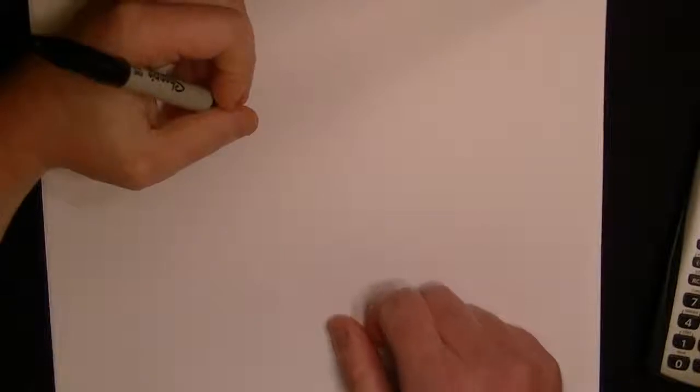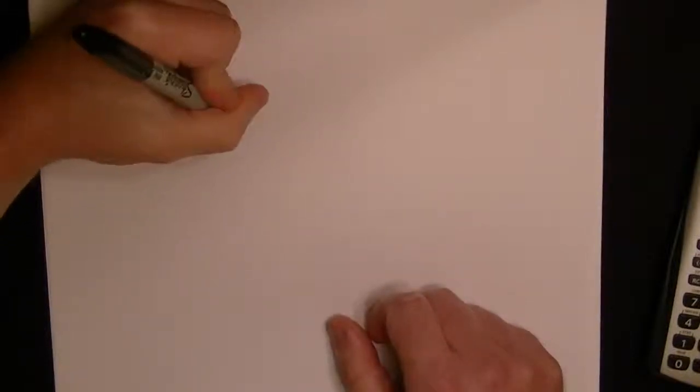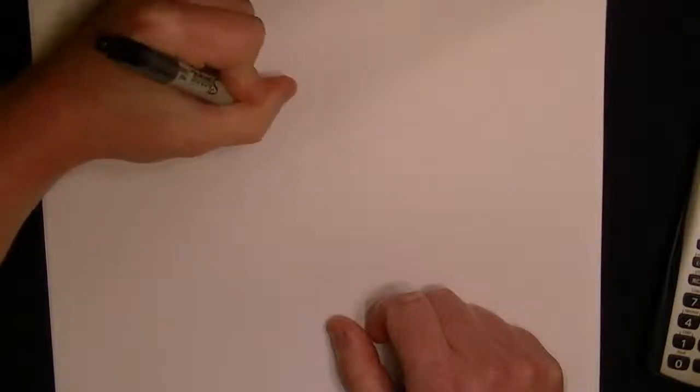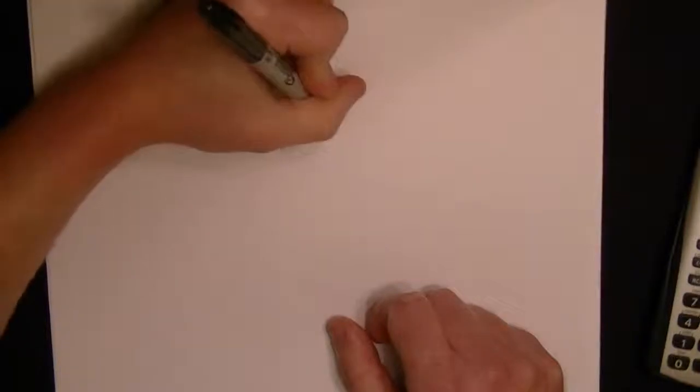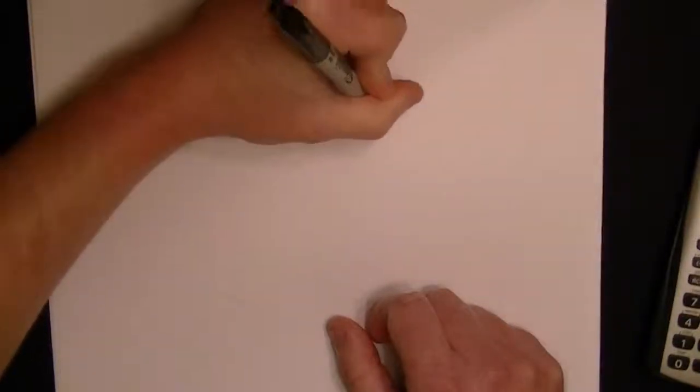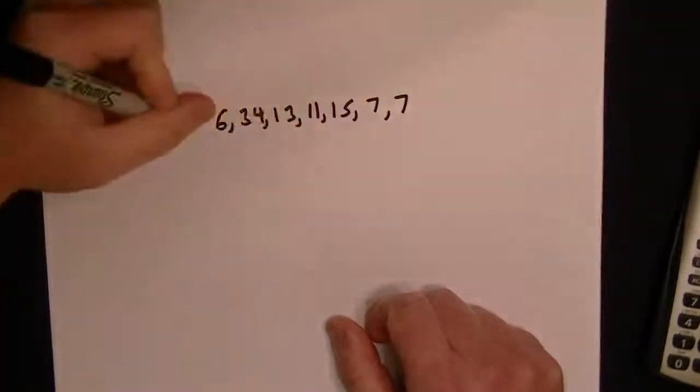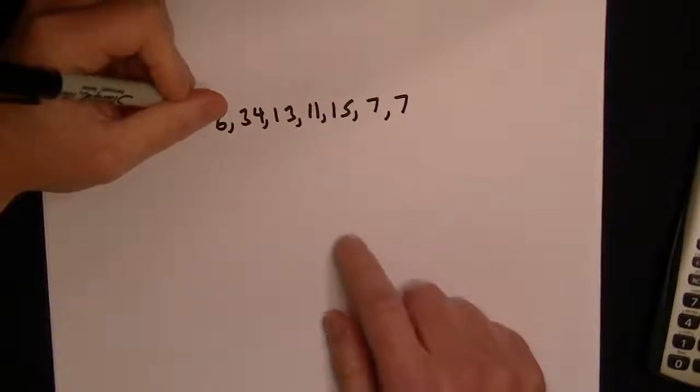We have to find the mean of a data set. The data set is just a list of numbers: 6, 34, 13, 11, 15, 7, and 7.